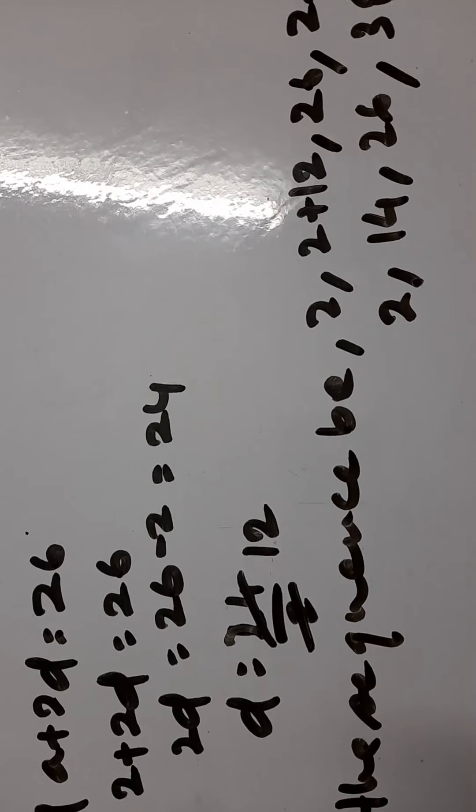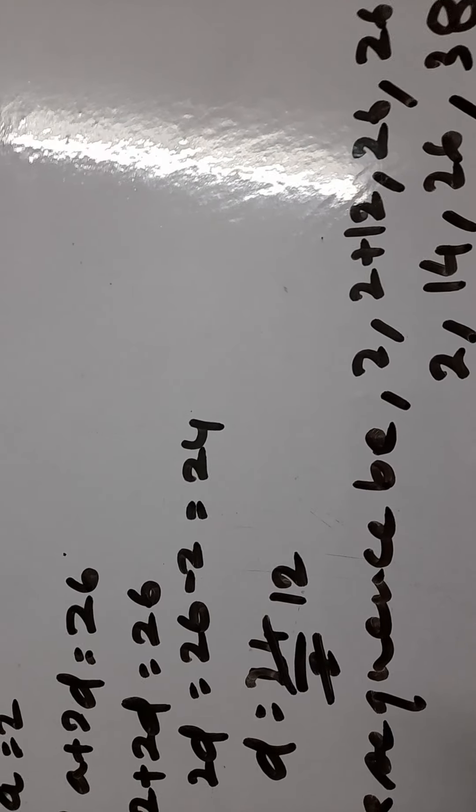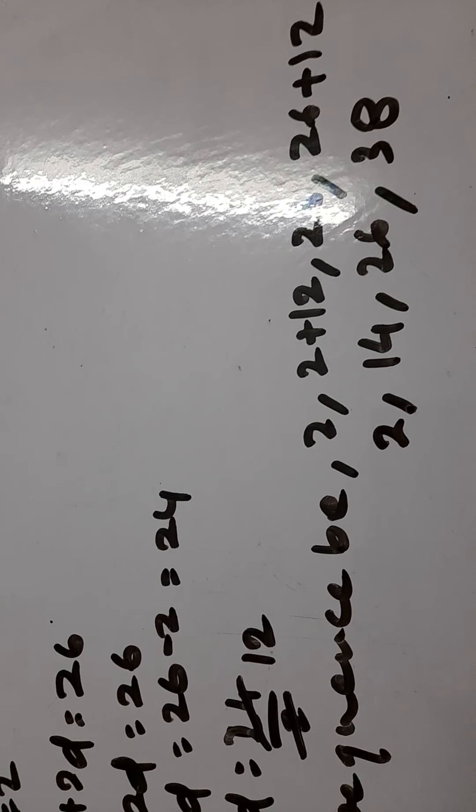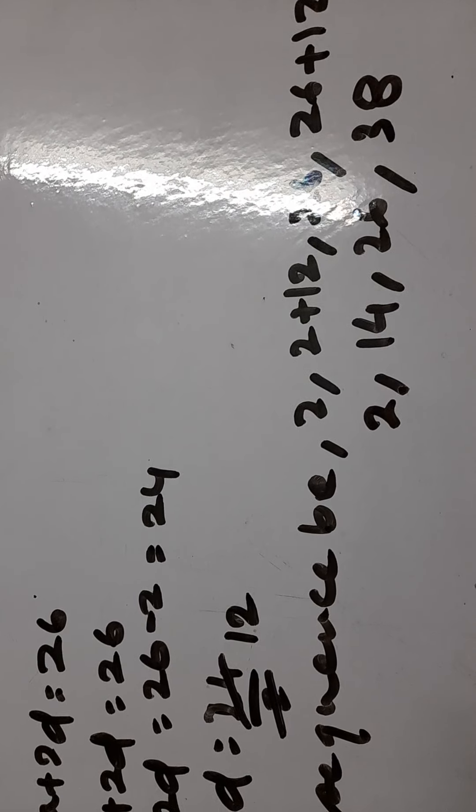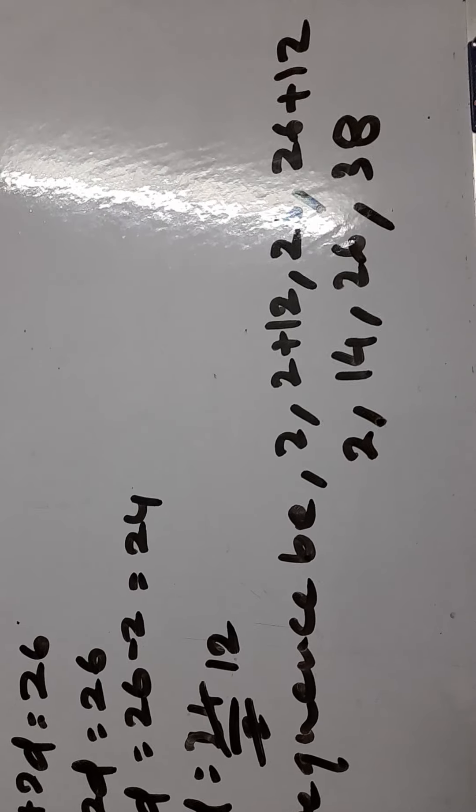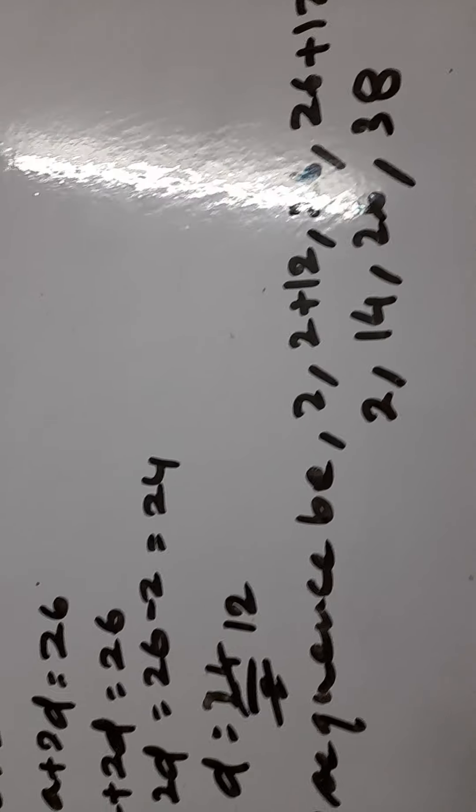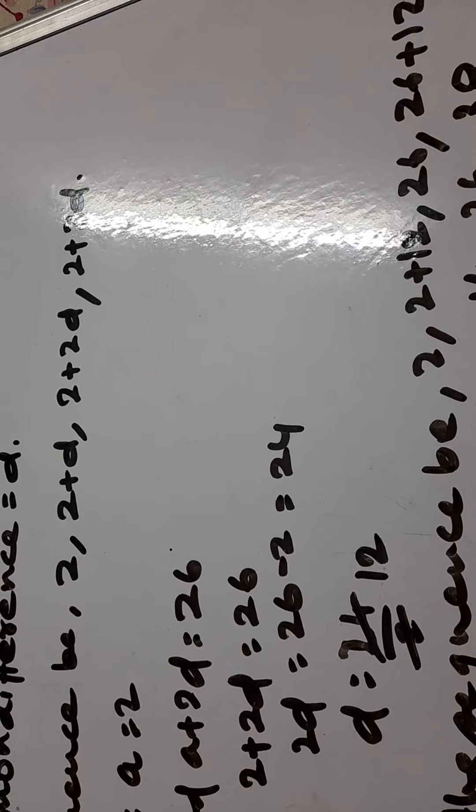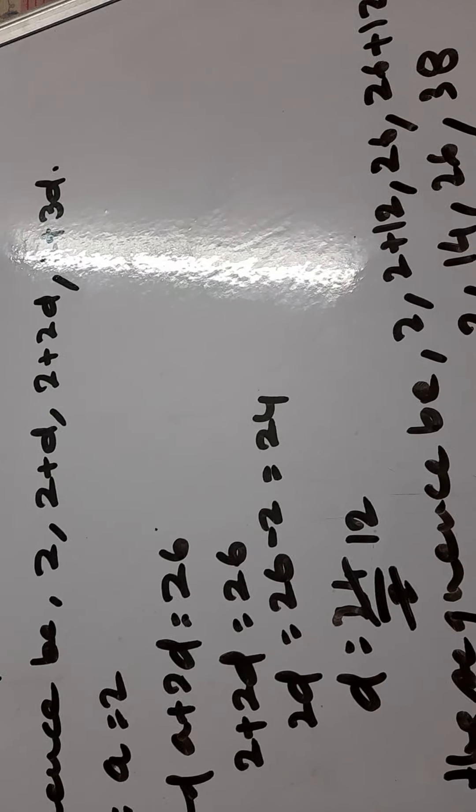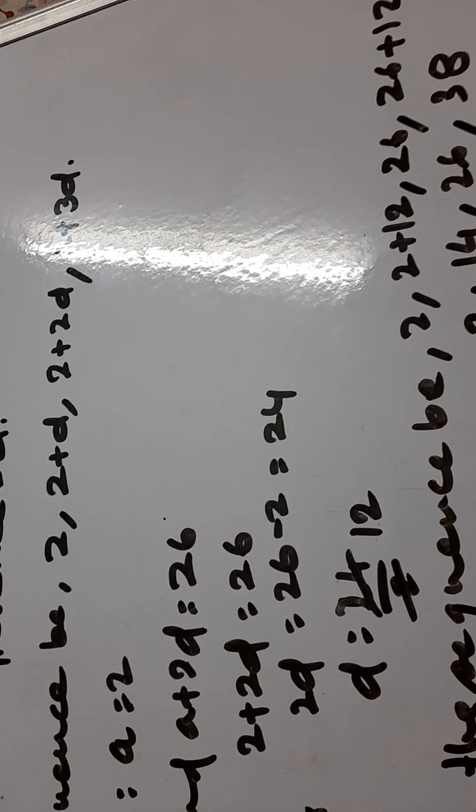So the sequence will be 2 comma 2 plus 12 comma 26 comma 26 plus 12. The sequence will be 2, 14, 26 and 38. So you have to fill the two blanks and that will be 14 and 38.